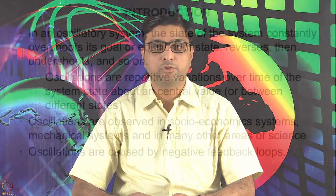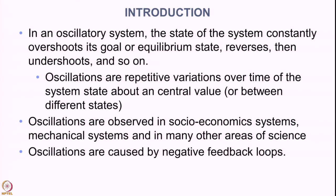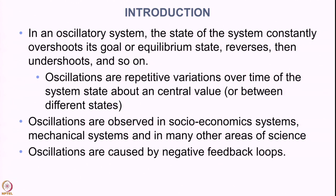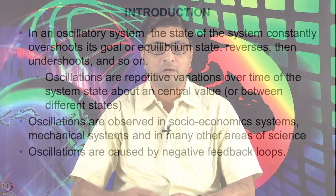In an oscillatory system, the state of the system constantly overshoots its goal or the equilibrium state, reverses, and then undershoots, and so on. Oscillations, as you might have seen, could be a sine wave or a cosine wave — these are examples of systems that constantly oscillate.